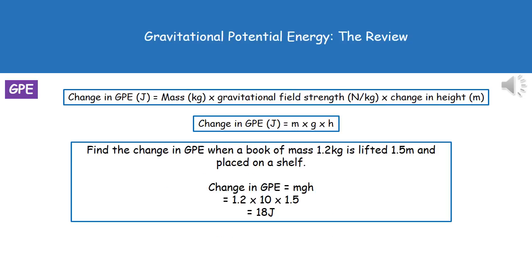The calculation at the top is found on page two of your exam booklet, so we don't have to memorize it. The change in GPE, measured in joules, equals the mass in kilograms times the gravitational field strength in newtons per kilogram times the change in height in meters. This can be summarized as change in GPE equals MGH.